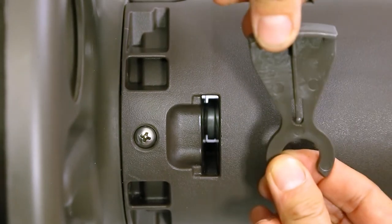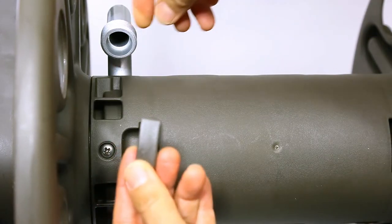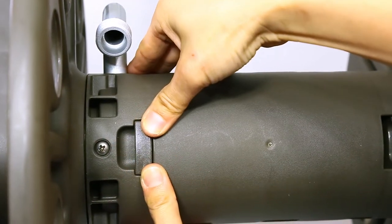Secure the supply tube with the C-shaped lock. Slide the lock into the slot and push until you hear an audible snap.